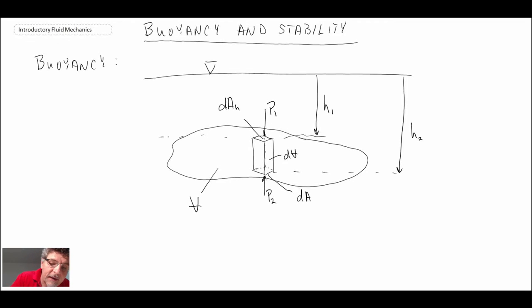And finally, the difference in height between the upper and the lower surface is H2 minus H1. So that's the scenario. We have this parallelepiped within a submerged body. And what we're going to do now is we're going to try to determine what is the net force on this little parallelepiped in a submerged body.